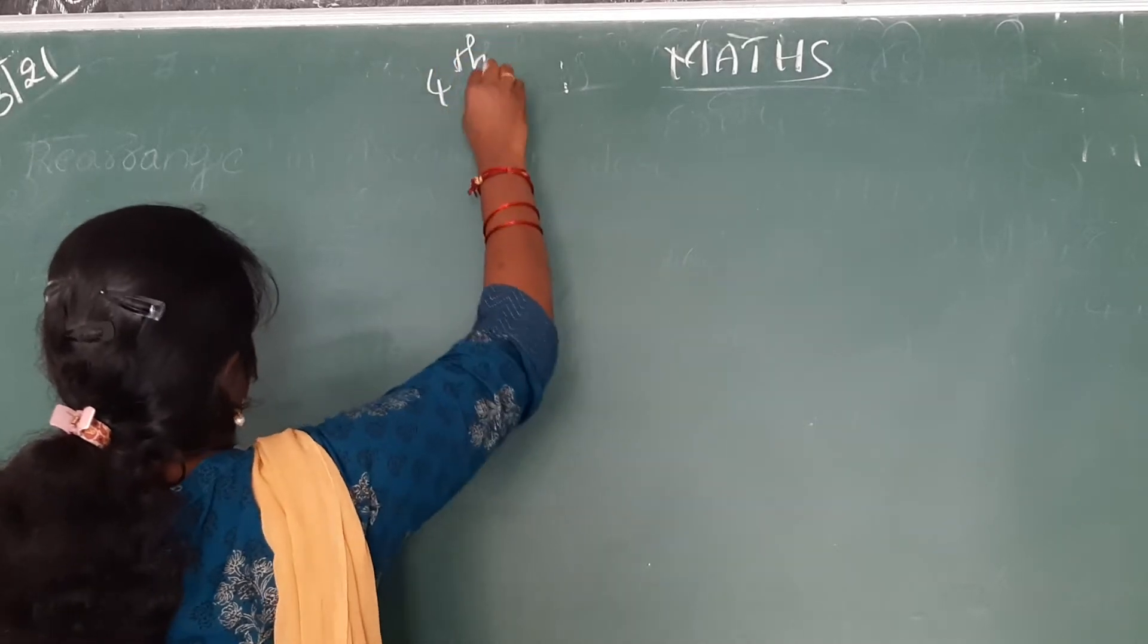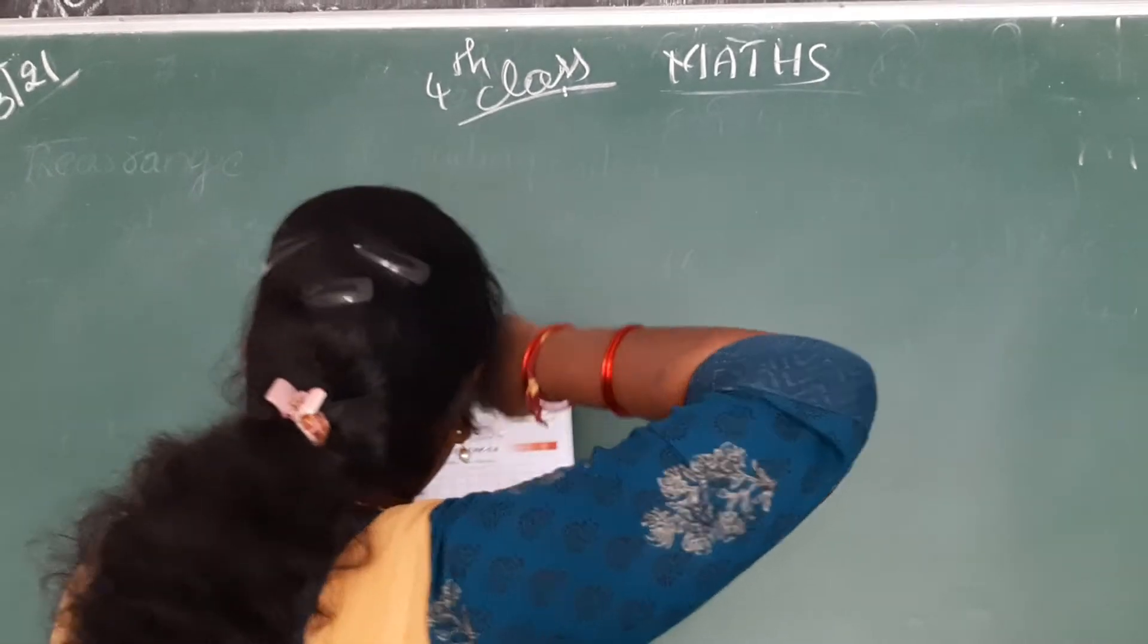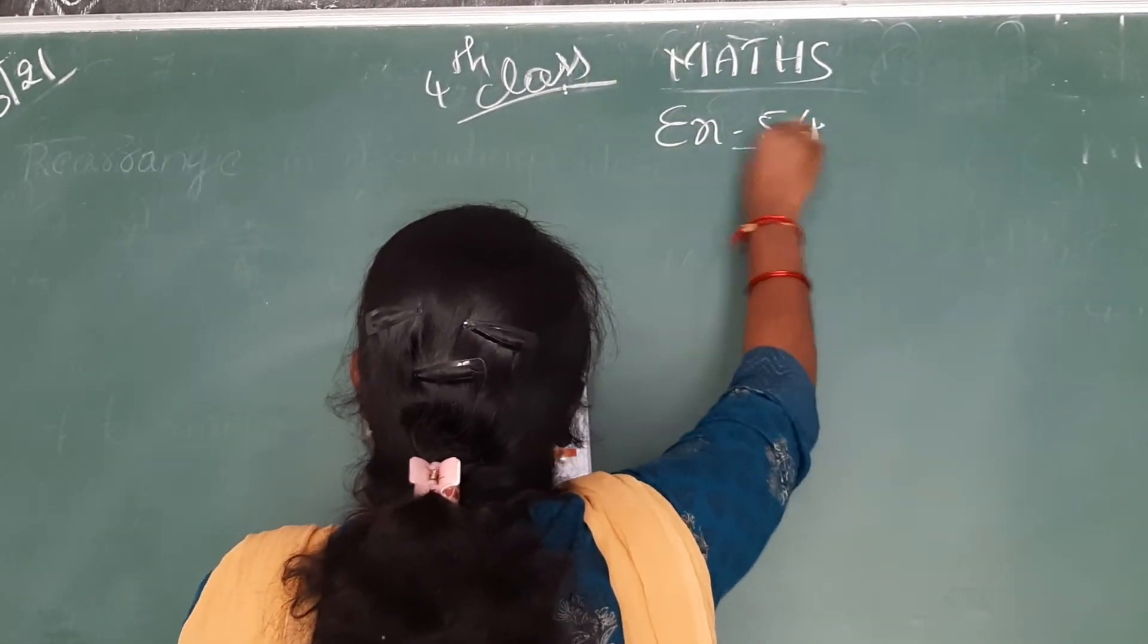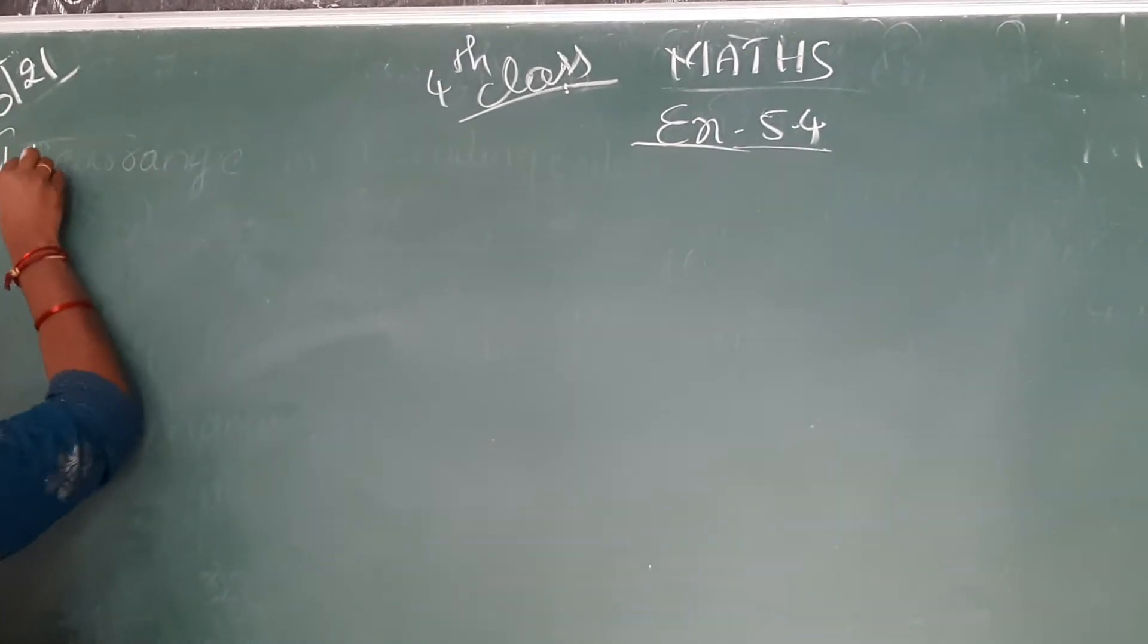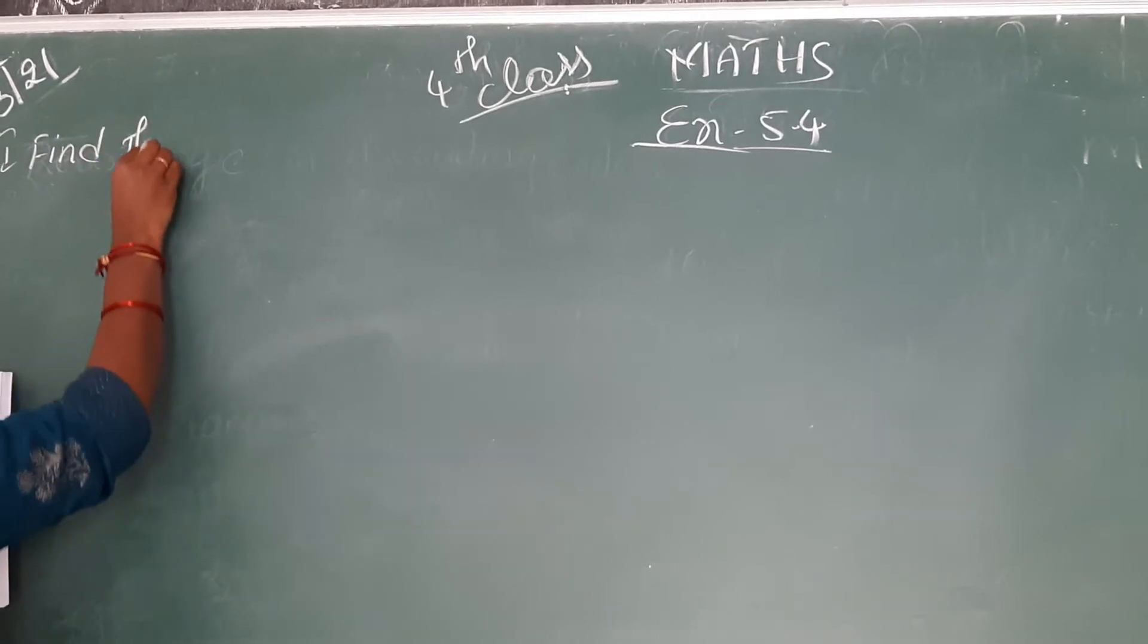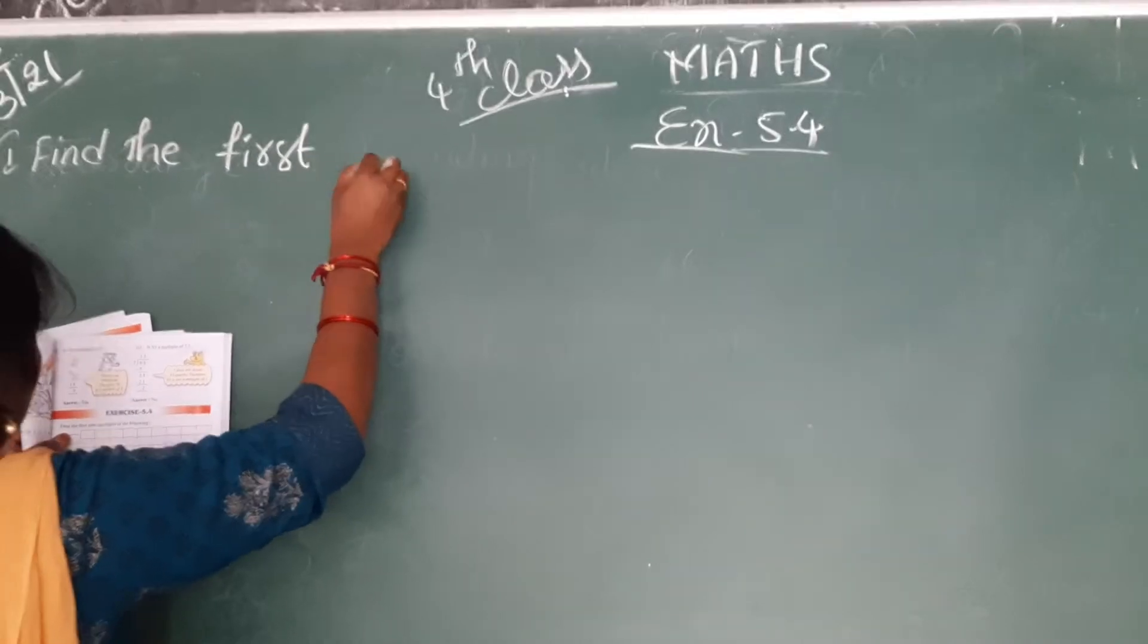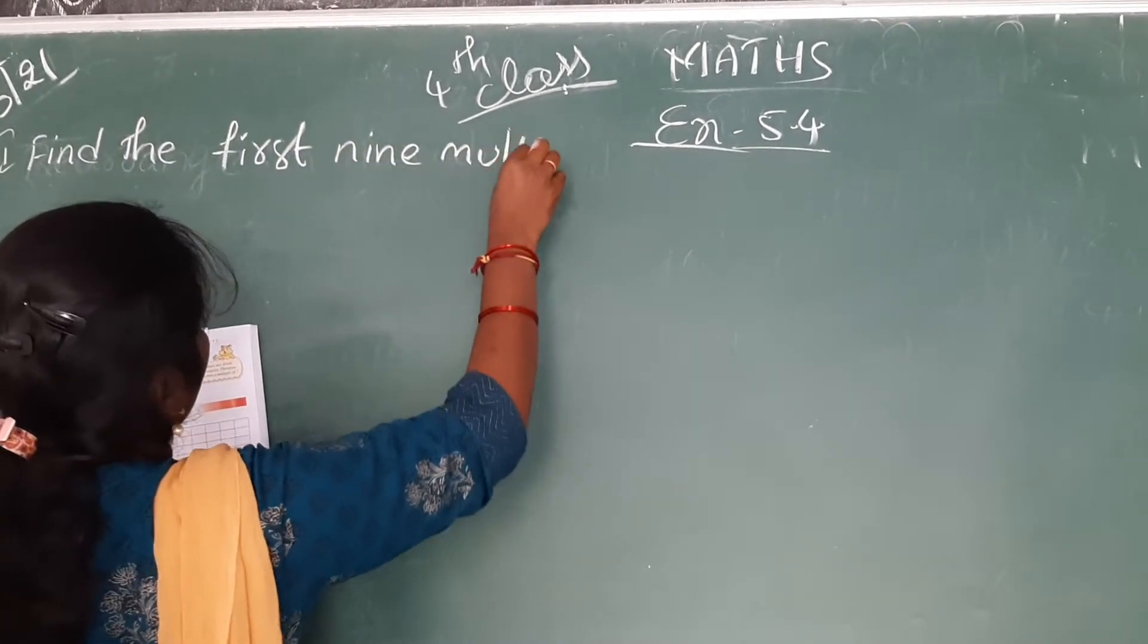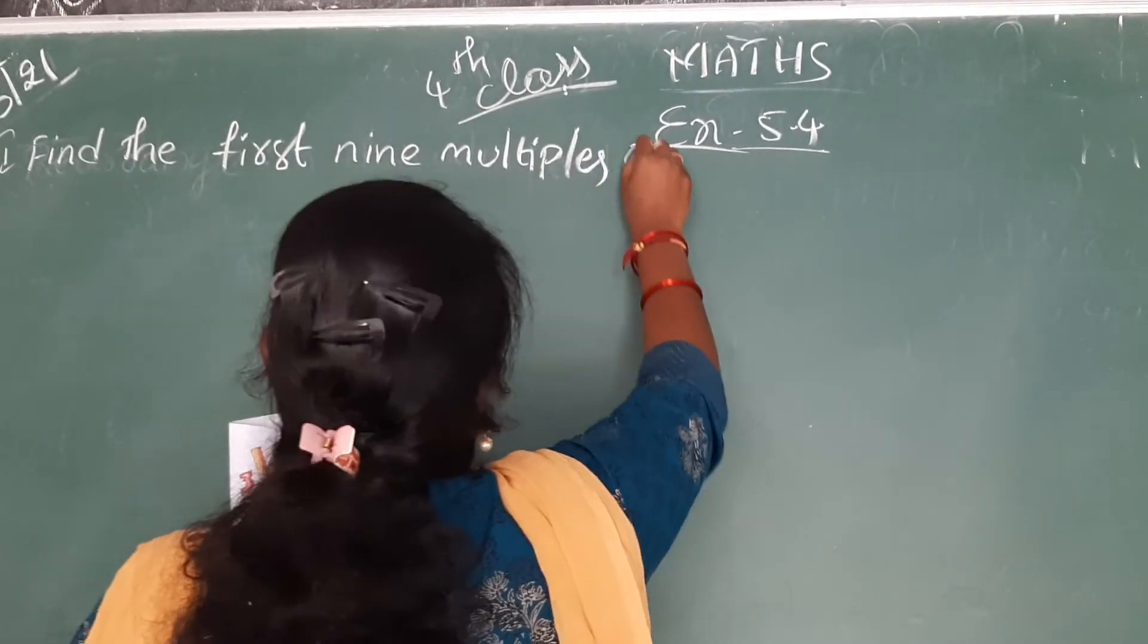4th class, open page number 77, exercise 5.4. Find the first 9 multiples of the following.